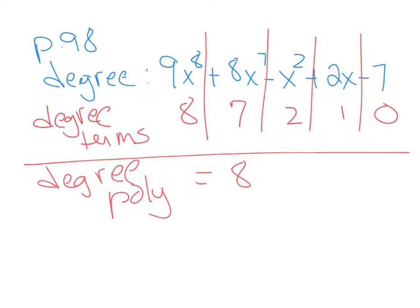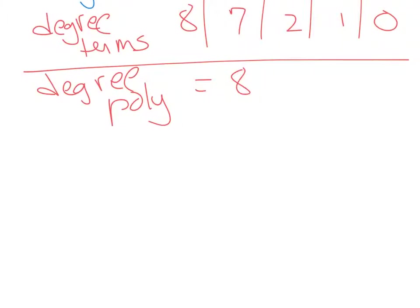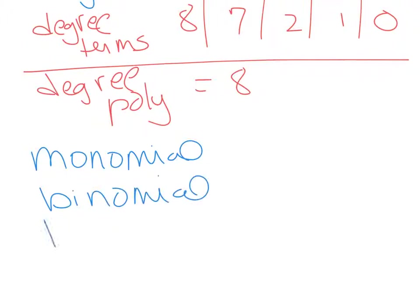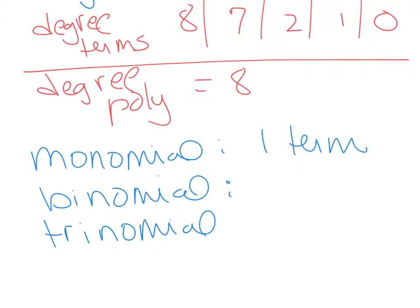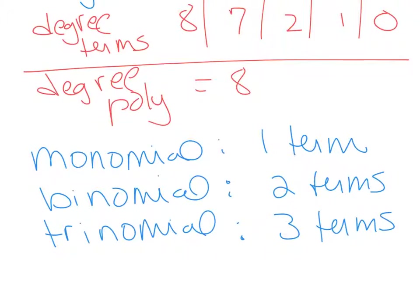The next vocabulary is classifications. There are three classification terms: monomial, binomial, and trinomial. A monomial is a polynomial with one term. A binomial is a polynomial with two terms. A trinomial is a polynomial with three terms. Any polynomial with four or more terms we just call a four-term polynomial or five-term polynomial, and so on.